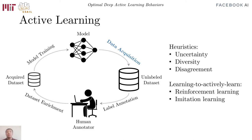More recently, deep reinforcement learning and imitation learning algorithms are used to learn an acquisition function on a related task, and then transfer it to the task at hand.